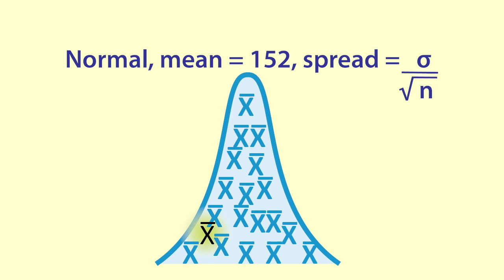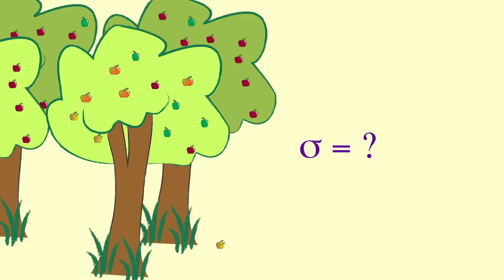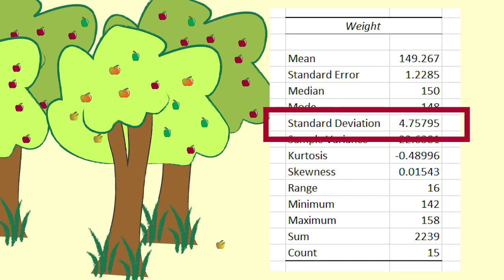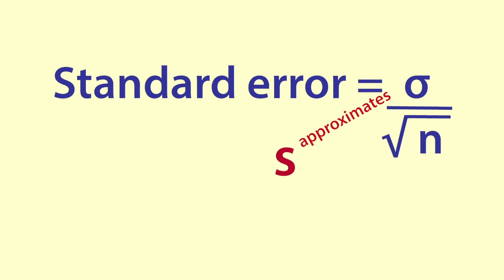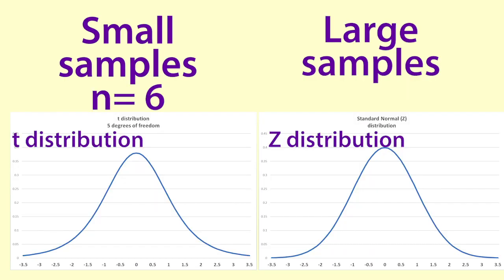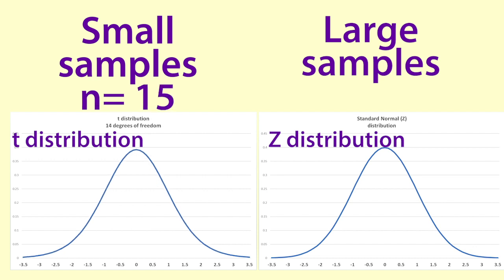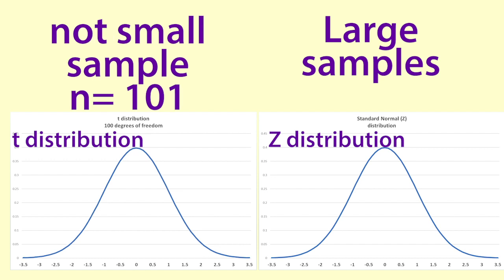If we knew the population standard deviation we could proceed from here. However, we do not usually know the population standard deviation. It's actually pretty unlikely to know the population standard deviation when we do not know the population mean. But we do have a sample standard deviation S, which we can use as an approximation to the population standard deviation sigma. With small samples we need to use the student's t or t distribution instead of the normal distribution. It is always okay to use the t distribution as it becomes the normal distribution for large samples.